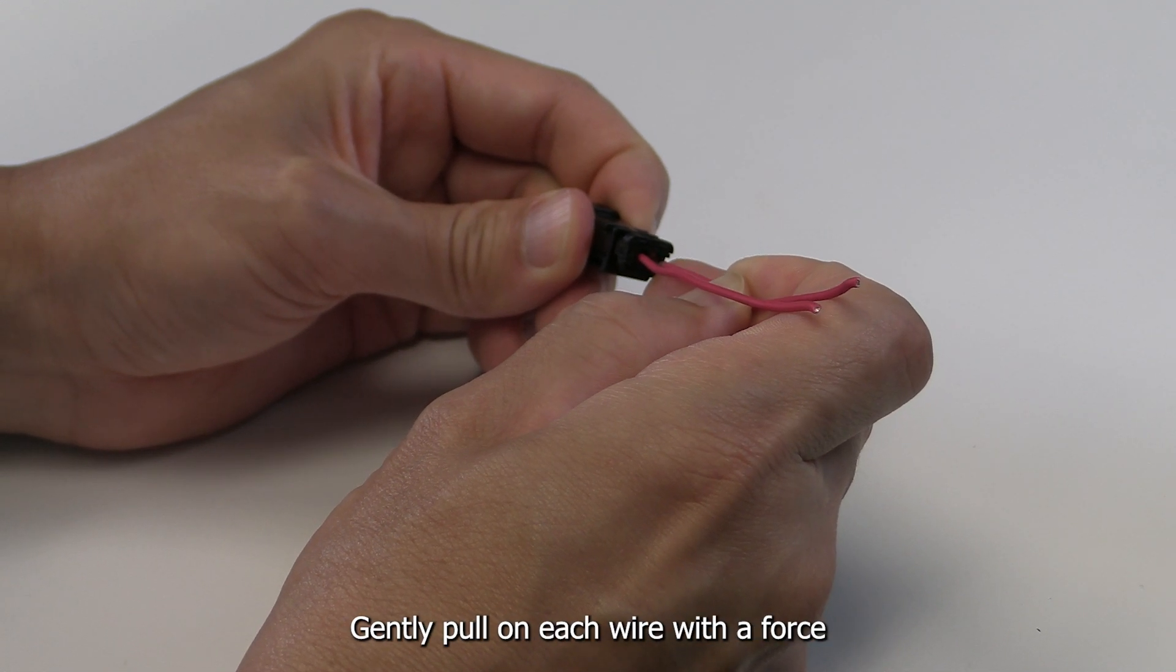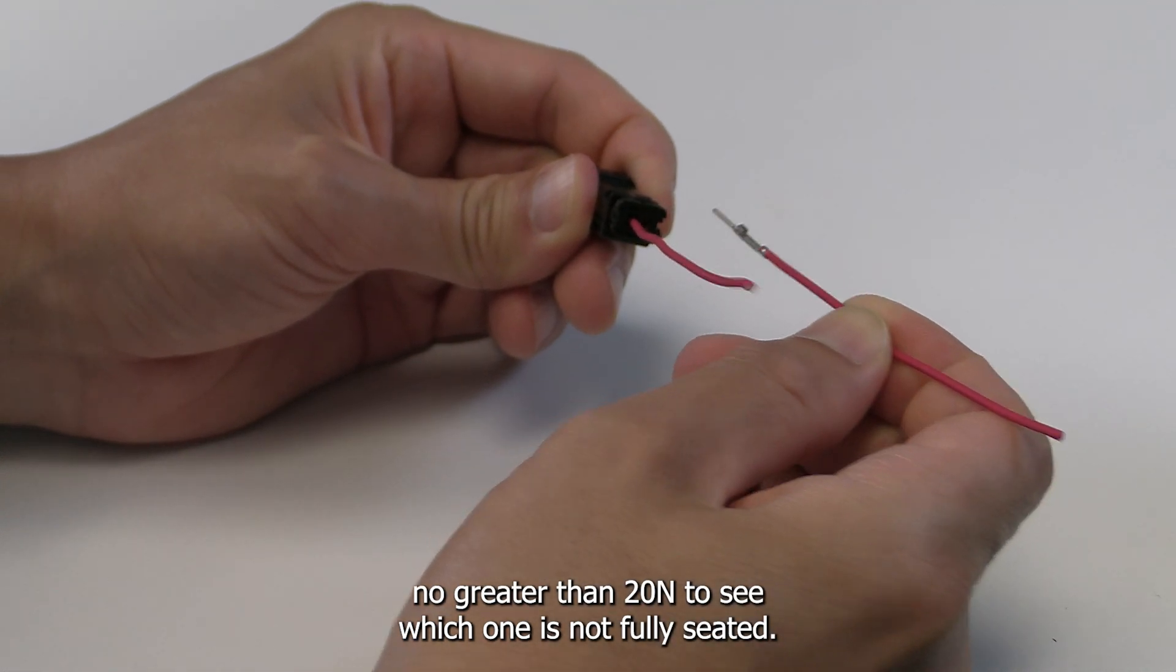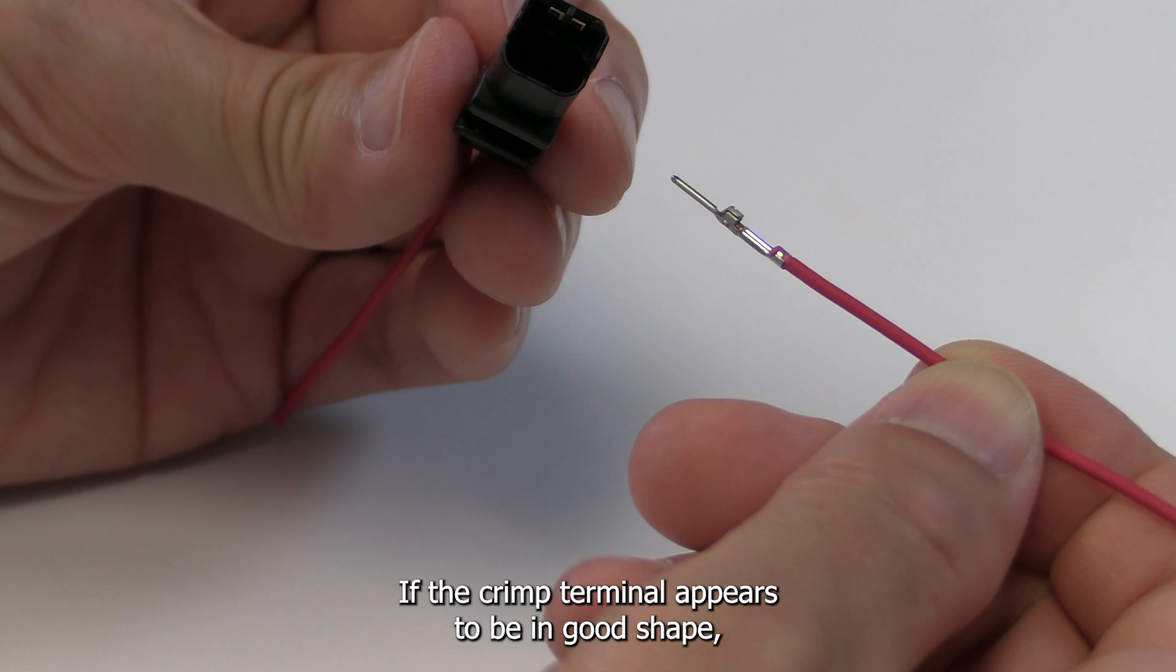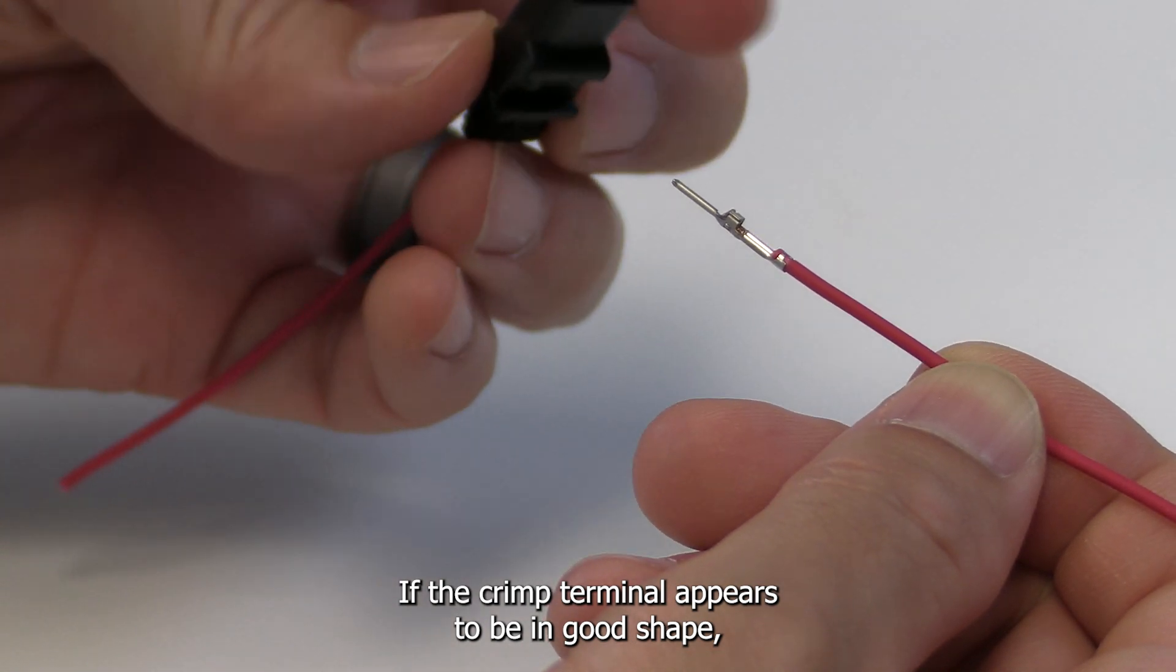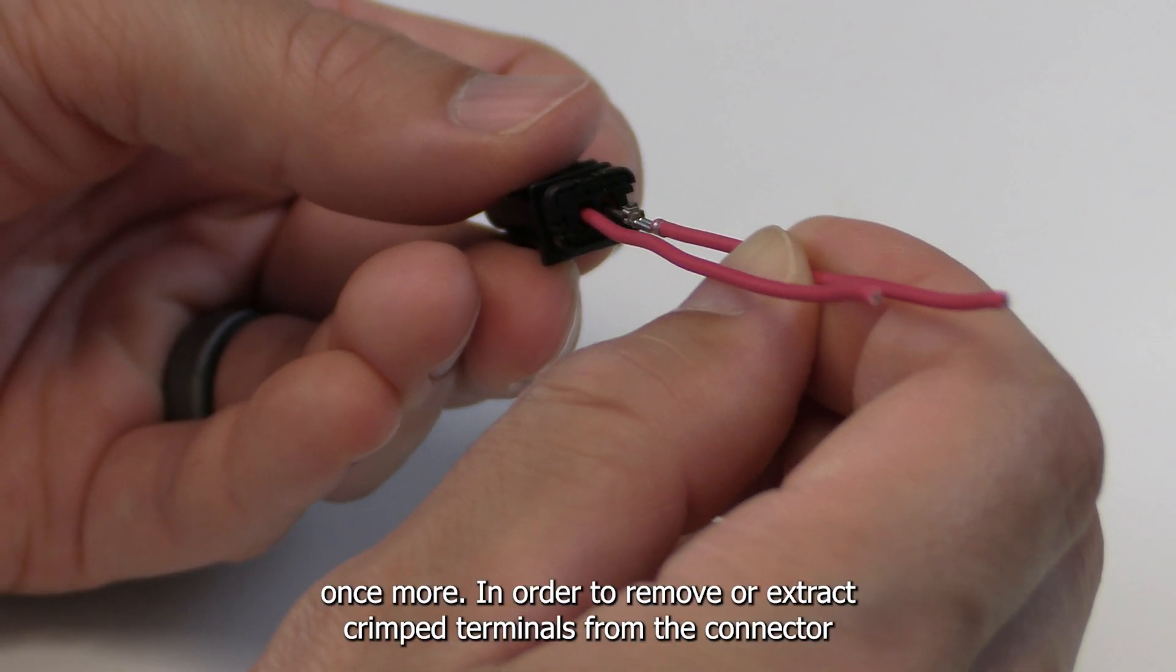Gently pull on each wire with a force no greater than 20 newtons to see which one is not fully seated. If the crimped terminal appears to be in good shape, try reinserting it into the housing and then closing the retainer once more.